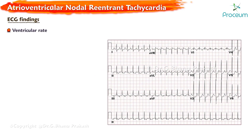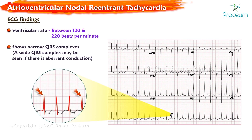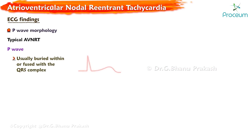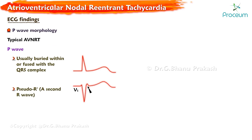ECG findings: the ventricular rate is generally between 120 and 220 beats per minute. The ECG typically shows narrow QRS complexes, although a wide QRS complex may be seen if there is aberrant conduction. Regarding P-wave morphology, in typical AVNRT the P-wave is usually buried within or fused with the QRS complex, resulting in a pseudo-R wave in lead V1 and a pseudo-S wave in the inferior leads.